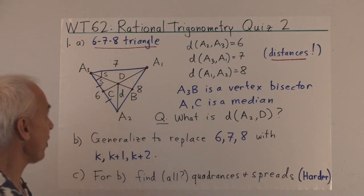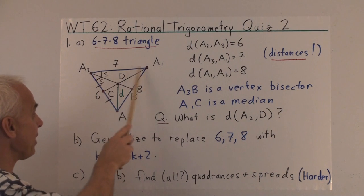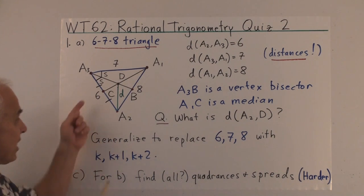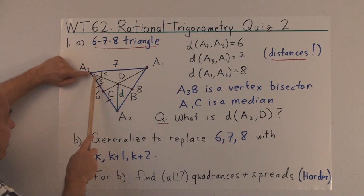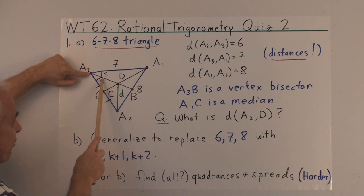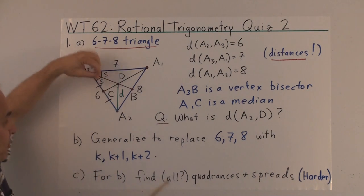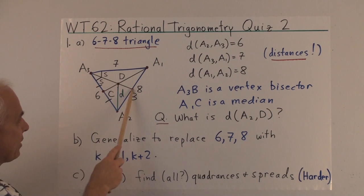Problem one is called the 6-7-8 triangle. It deals with a triangle A1, A2, A3, whose side lengths are 6, 7, and 8. These are the distances. And we suppose that we have a vertex bisector at A3. That's a line so that these two spreads are equal, or if you like, these two angles are equal.